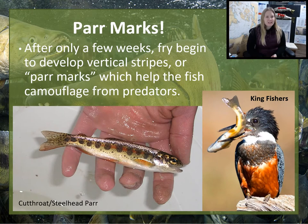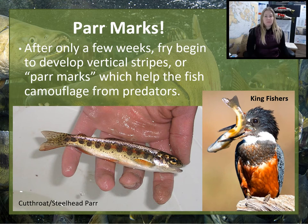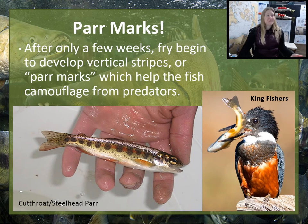Here's an example of what the par marks look like. If a fish is the type that likes to spend lots of time in freshwater before moving to saltwater, they'll develop par marks — vertical stripes or spots that help the fish camouflage from predators. They blend in with the sticks and leaves in the stream, so birds and bigger fish have a harder time seeing them, especially from above.